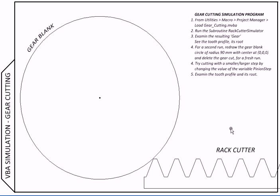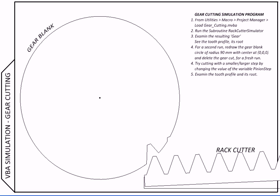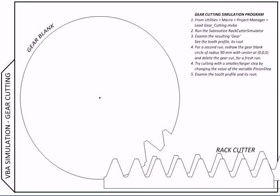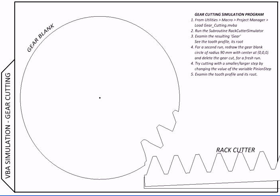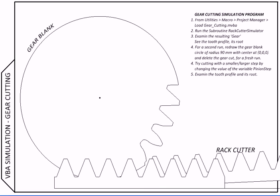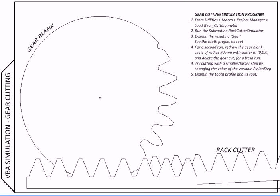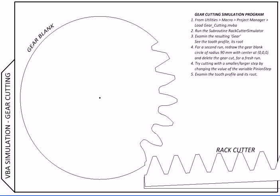So this is how it looks. The rack cutter is rotating as well as advancing, and whatever is coming in its way, it is removing from the gear blank. So slowly you can notice the gear tooth taking shape. Once it's done, we can zoom in and take a closer look.